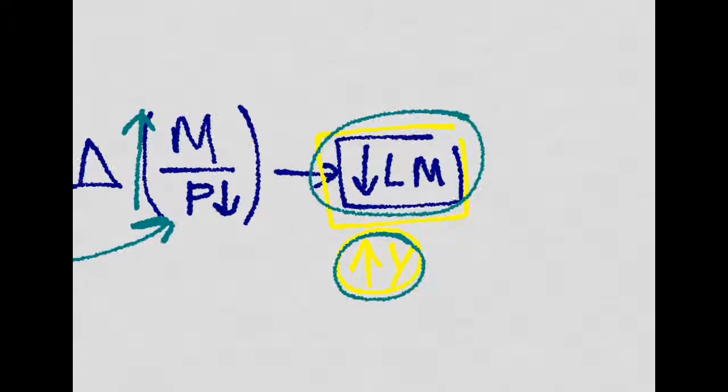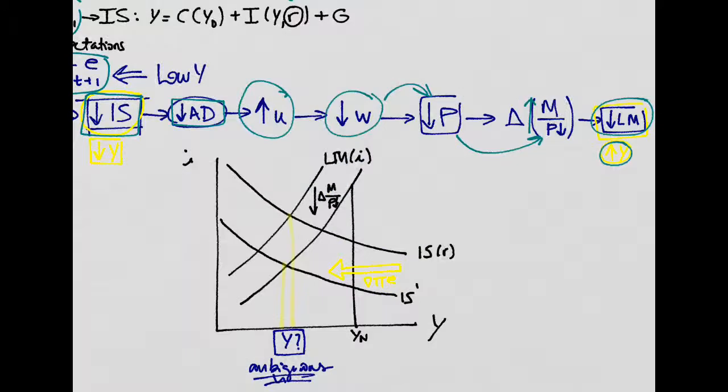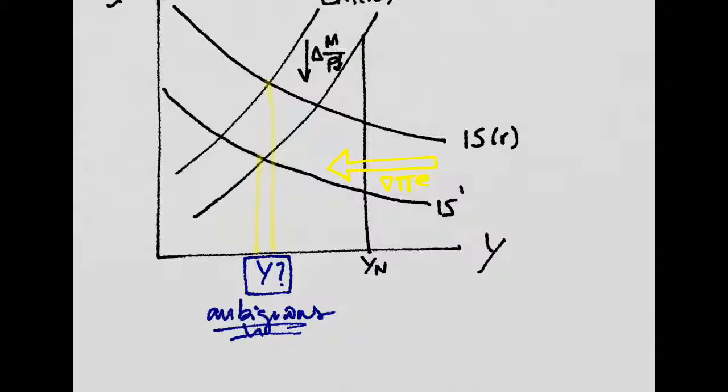which increases output. So here we have two opposite effects on output. We have the decrease in the IS, which decreases output, and we have the shift down on the LM, which increases output. And this is what you can see in this graph.